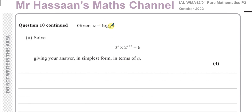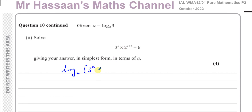Since a is defined in terms of base 2, when solving this equation I could take log to the base 10, base 3, or base 2. However, since I want to express my answer in terms of a, which equals log to the base 2 of 3, the sensible choice is to use log to the base 2. This will free the x's from the exponents. So I take log to the base 2 of both sides: log to the base 2 of 3 to the power of x times 2 to the power of x plus 4 equals log to the base 2 of 6.